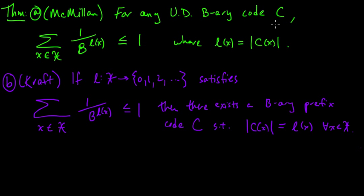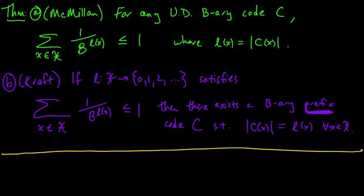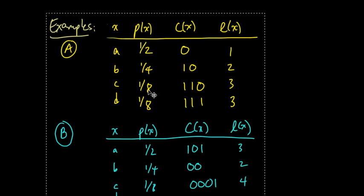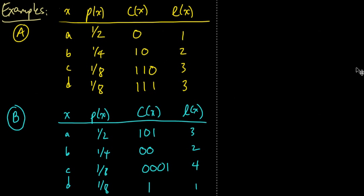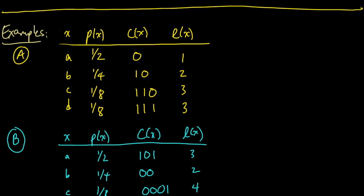So McMillan says: give me a uniquely decodable code and I guarantee its lengths satisfy the inequality. Kraft says: give me lengths that satisfy the inequality and I will give you a b-ary prefix code with those lengths. Note that Kraft gives you a prefix code, which is of course uniquely decodable, but it's even stronger than that. Let's now illustrate this with our familiar examples A and B and check that the theorem works.